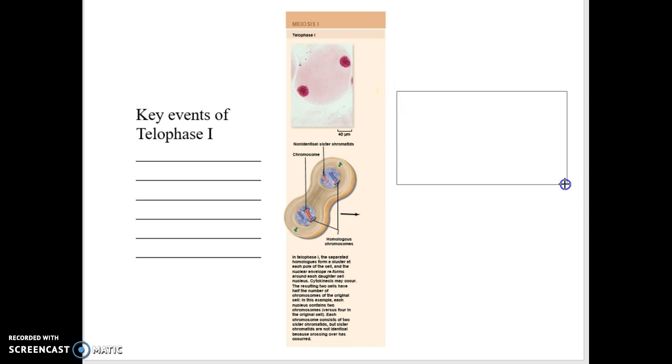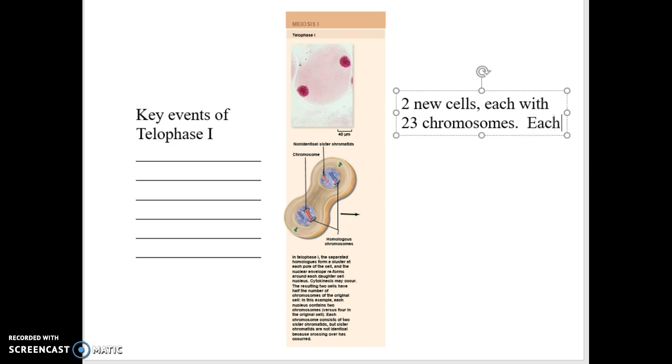But during telophase, the cells divide and there will be two new cells, each with 23 chromosomes.